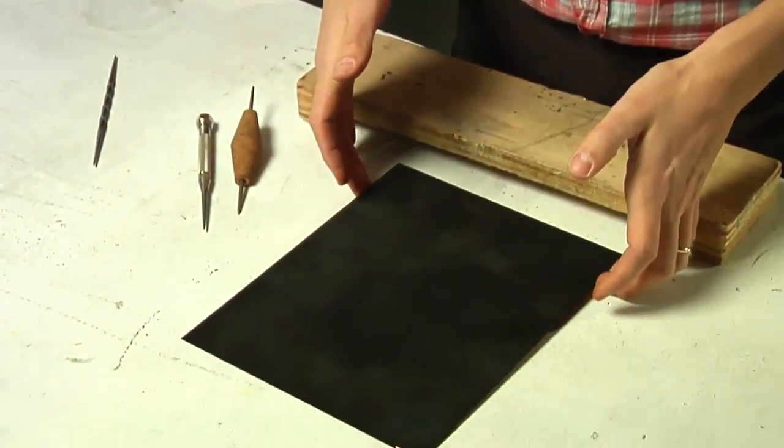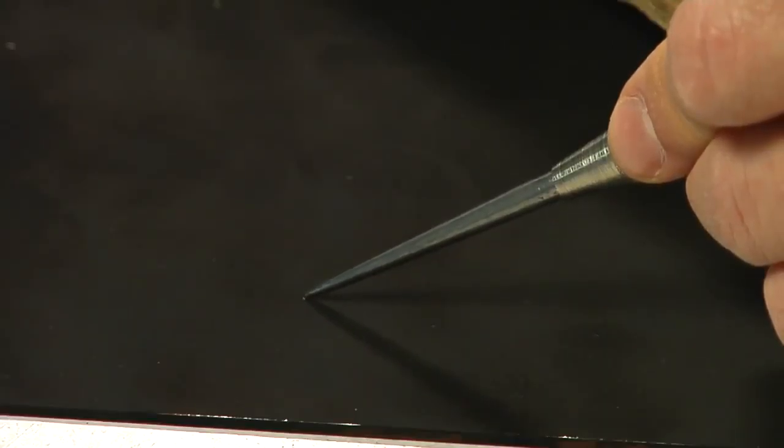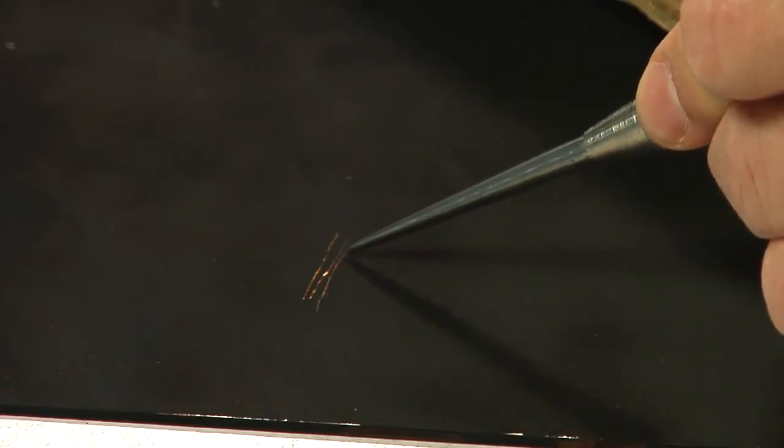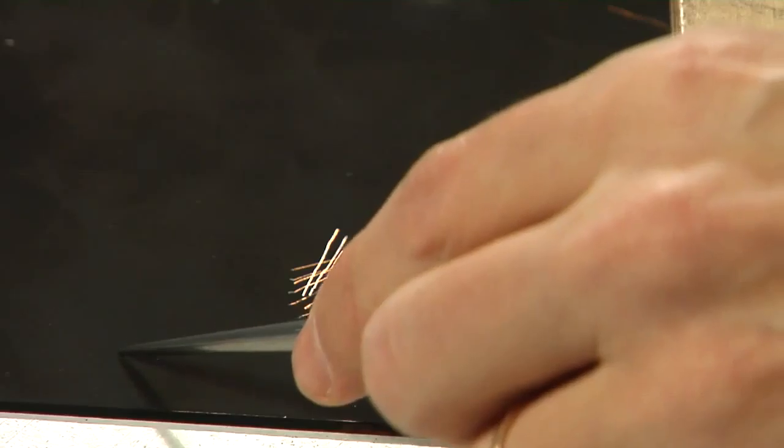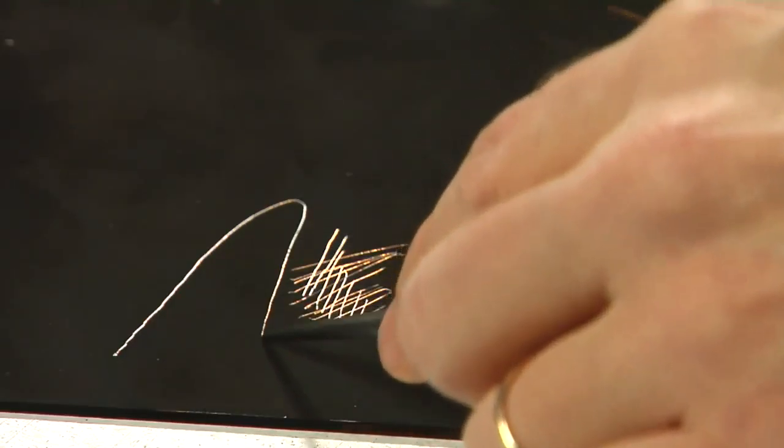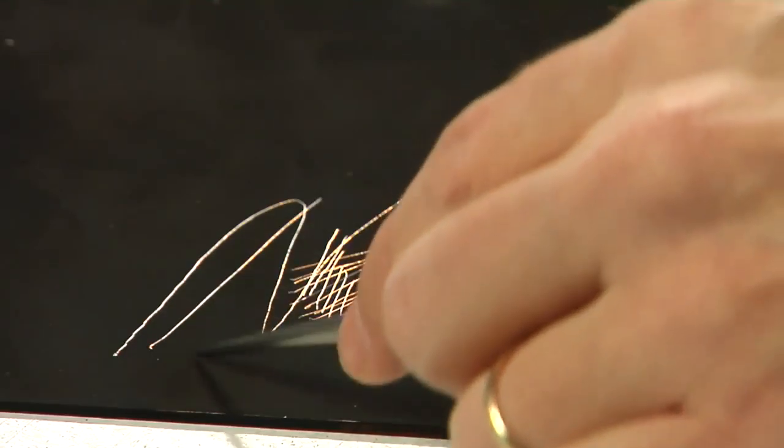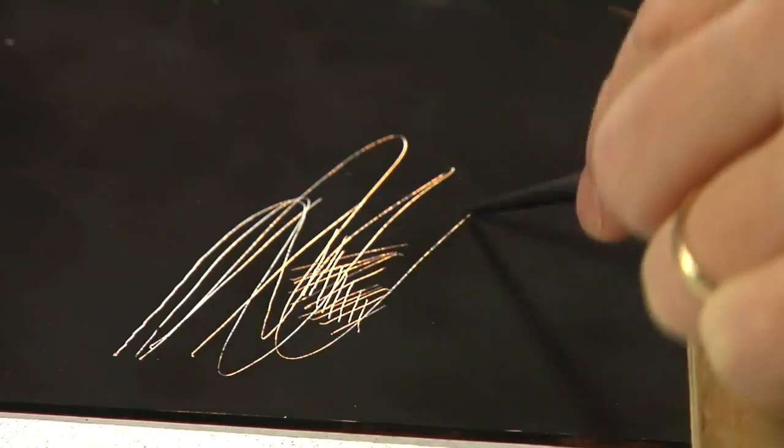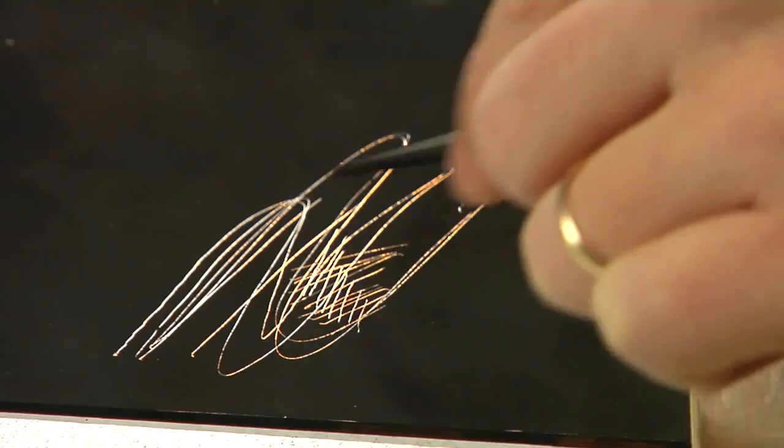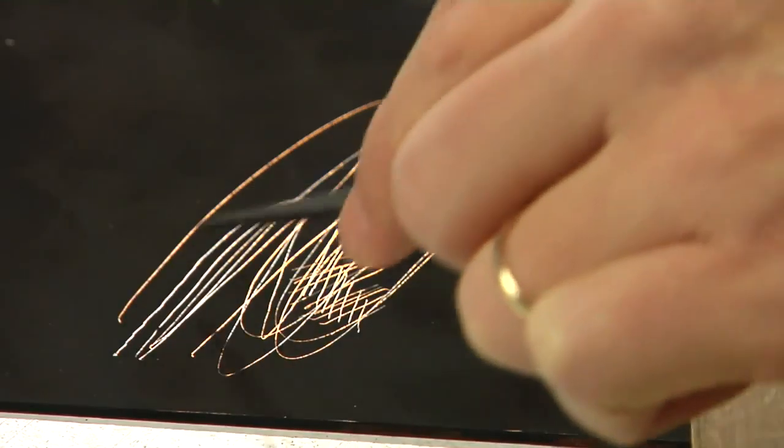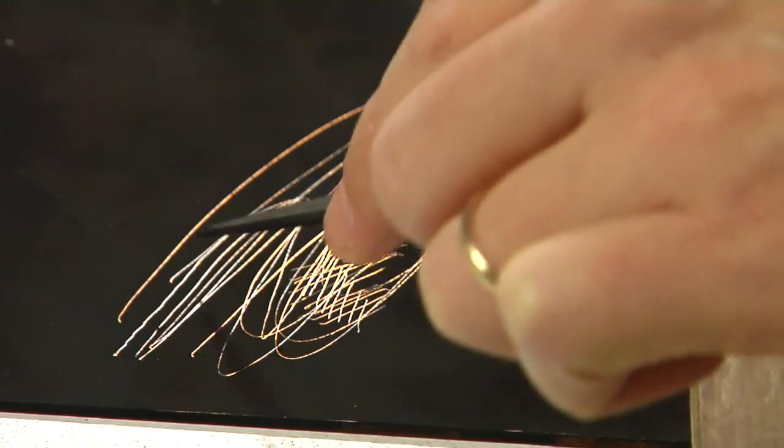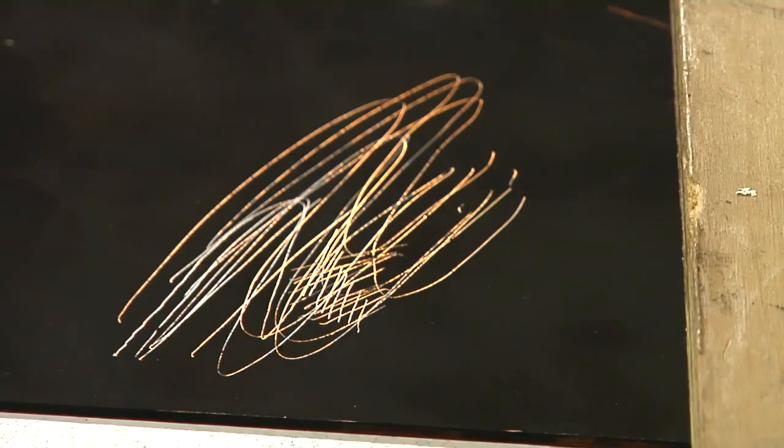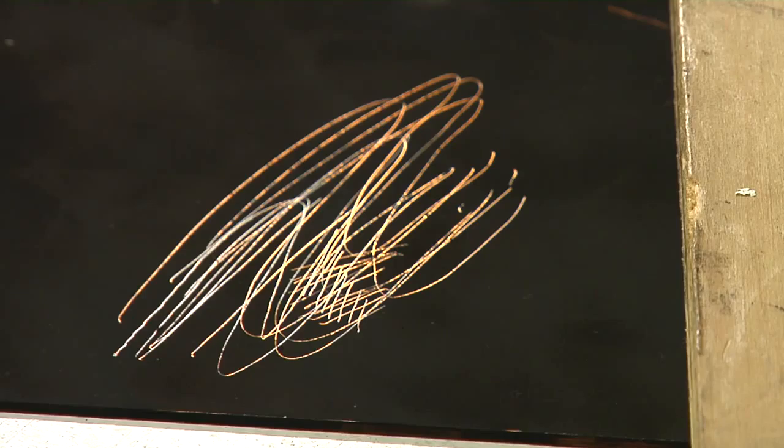Drawing a plate involves scratching away the ground so that copper is revealed. This is different than dry point. Dry point's scratching of the plate is to create a burr or to move metal. In this case, we're actually only barely scratching the surface just to remove the ground. Wherever copper is showing through that black ground, it will be etched or eaten away to create a trough for ink to sit in. So the copper lines become the image that will be printed onto paper.